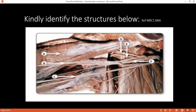B seems to be the median nerve. All right. C — can you identify C? It seems to be a nerve arising from the medial cord, most probably the ulnar nerve.